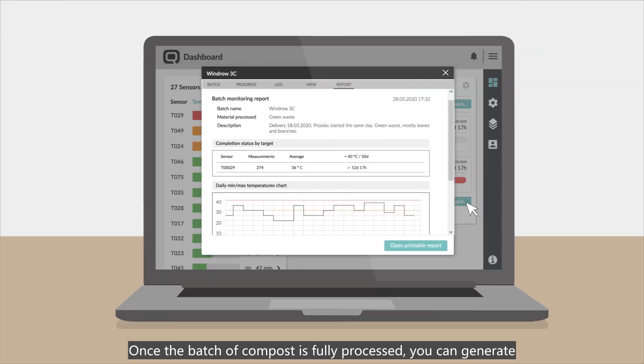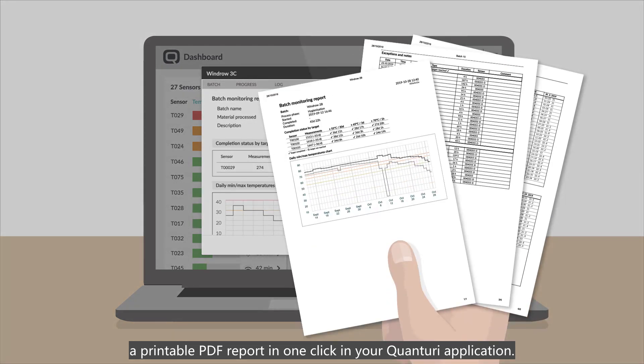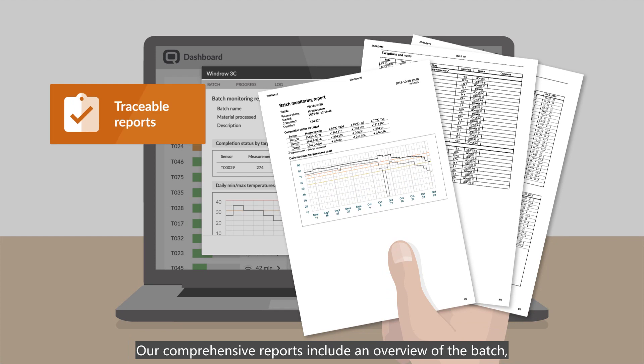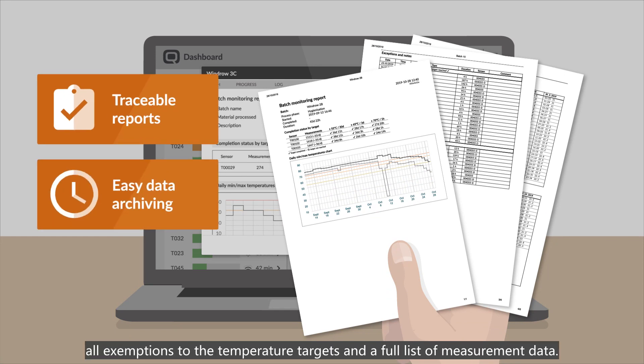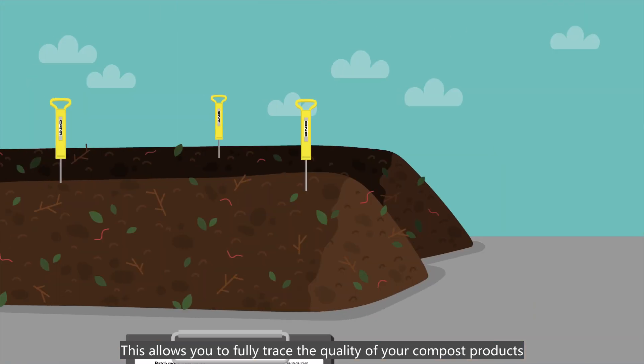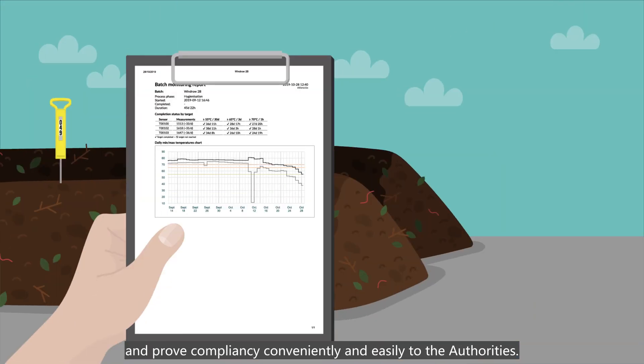Once the batch of compost is fully processed, you can generate a printable PDF report in one click in your Quantory application. Our comprehensive reports include an overview of the batch, all exemptions to the temperature targets, and a full list of measurement data. This allows you to fully trace the quality of your compost products and prove compliancy conveniently and easily to the authorities.